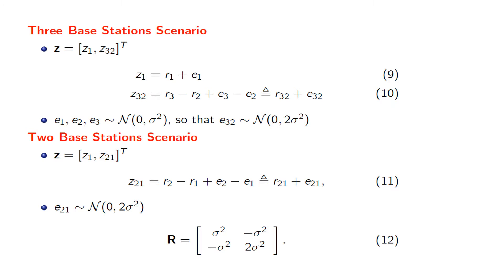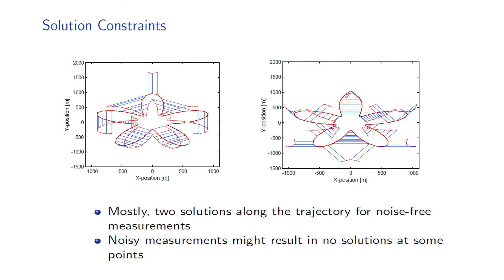The corresponding measurement models are of the form given by equations 9 and 10. Similarly, for the two-base-station scenario, the measurement vector is given by Z1 and Z21, where Z21 denotes the noisy range difference measurement obtained from neighboring base station S2 and serving base station S1, with the corresponding measurement model given in equation 11. Altogether, the position estimator X-hat is obtained by using noisy measurements instead of noise-free measurements in the solutions provided in previous slides.